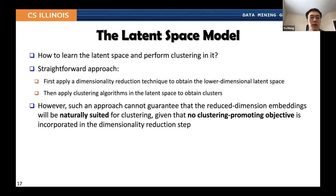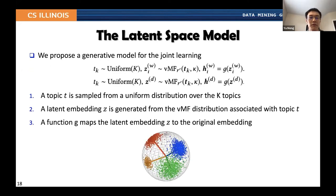To learn this latent space and perform clustering, a straightforward approach would be to first apply dimensionality reduction techniques like PCA or deep learning-based approaches, and then subsequently cluster in the latent space. But such an approach cannot guarantee that the reduced dimension embeddings will naturally fit for clustering. Instead of doing these two processes subsequently, we do them jointly. We propose a generative model where we first sample a topic from a uniform distribution over k topics, assume the latent embedding is generated from a von Mises-Fisher distribution, and then use a learnable function to map the latent embedding back to the original embedding space.